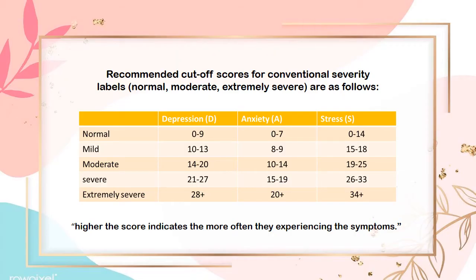To interpret the score, we will use the recommended cutoff scores that range from normal to extremely severe. By referring to the table, we can identify the severity of the depression, anxiety, and stress disorder. The higher the score indicates the more often the individual experiences the symptoms.